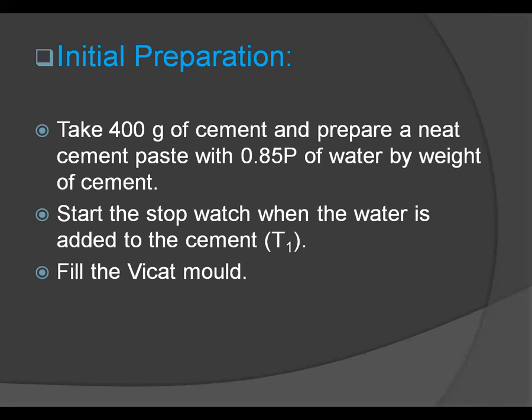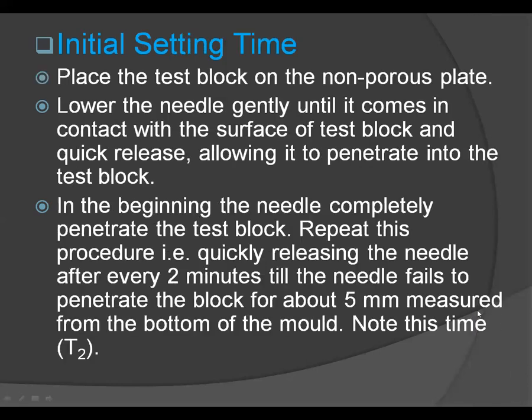To carry out the initial setting time test, place the test block confined in the mould and resting on a non-porous plate under the rod bearing the needle. Lower the needle gently until it comes in contact with the surface of the test block, then quickly release it, allowing it to penetrate into the test block. In the beginning, the needle will completely penetrate the test block. Repeat this procedure, quickly releasing the needle every 2 minutes, until the needle fails to penetrate the block to about 5 mm from the bottom of the mould. Note this time as T2.